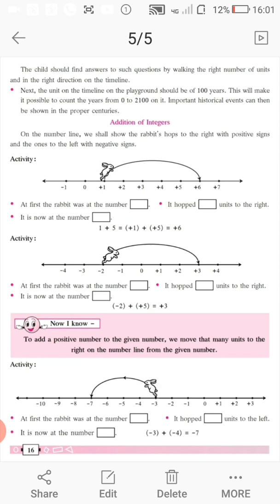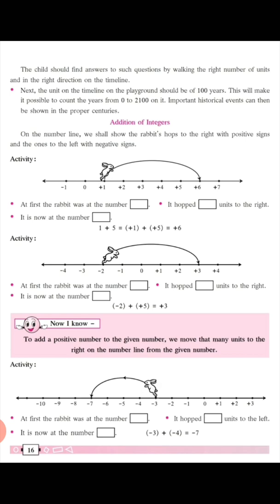Next activity. At first, the rabbit was at the number minus 3. It hopped 4 units to the left — count: 1, 2, 3, 4. Remember, when it goes towards its left side, the hops will become negative. It is now at minus 7. So, minus 3 plus (minus 4) — 4 hops to the left means minus 4 — is equal to minus 7.